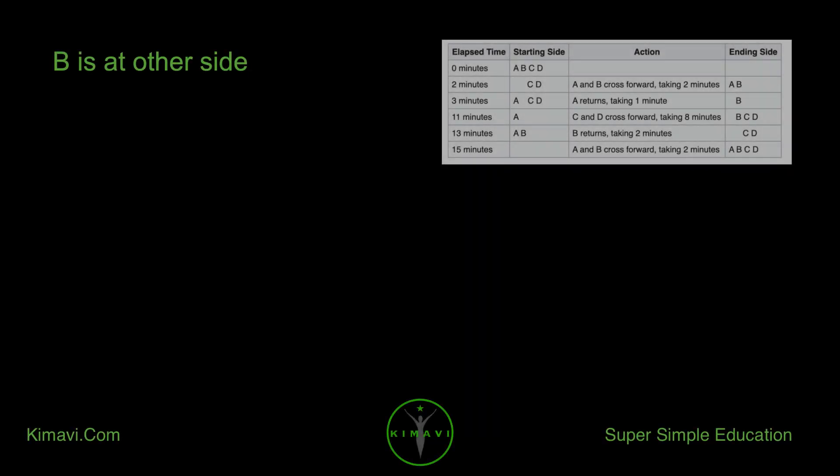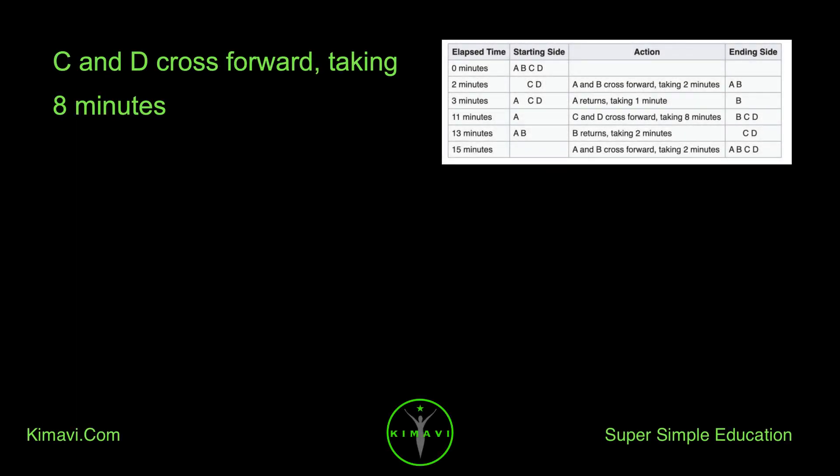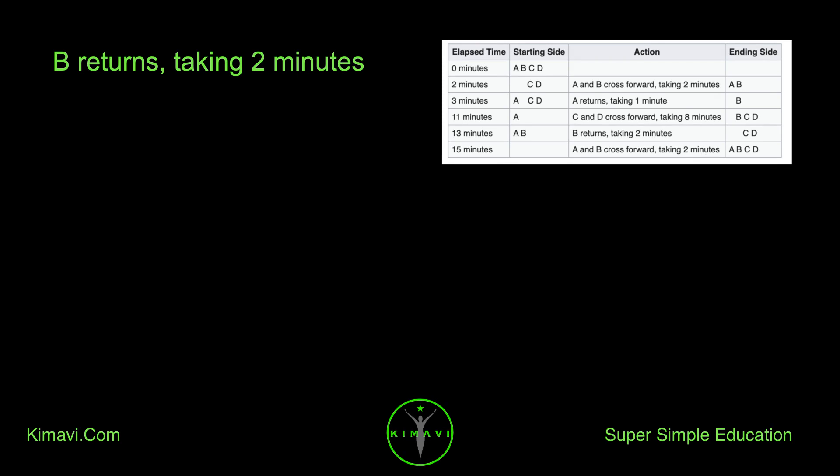B is at the other side. Elapsed time at 11 minutes: C and D cross forward, taking eight minutes. Elapsed time at 13 minutes: B returns, taking two minutes. C and D are on the other side.